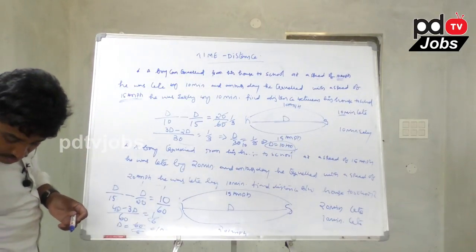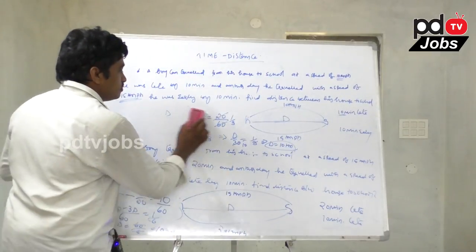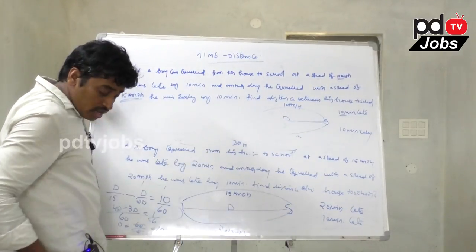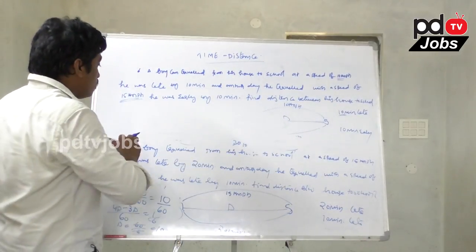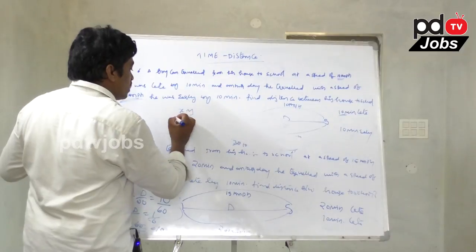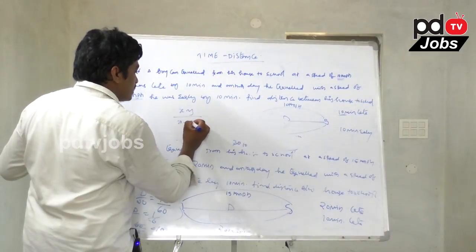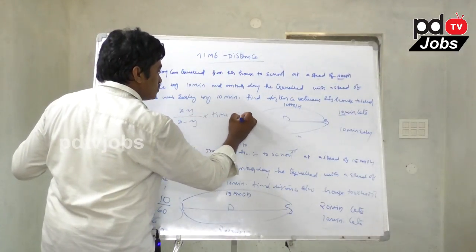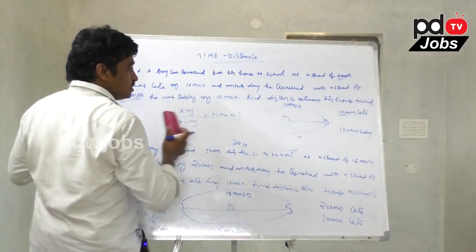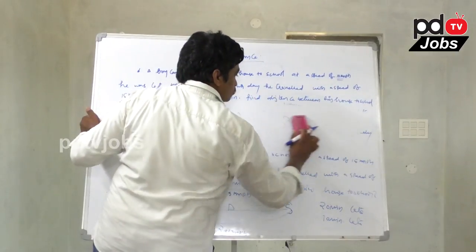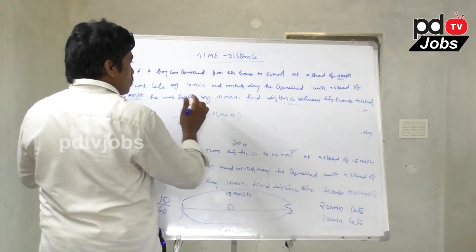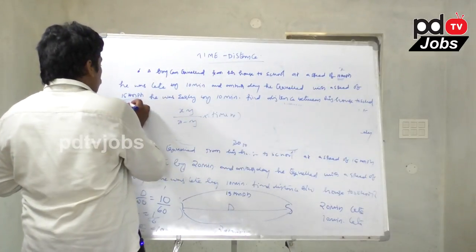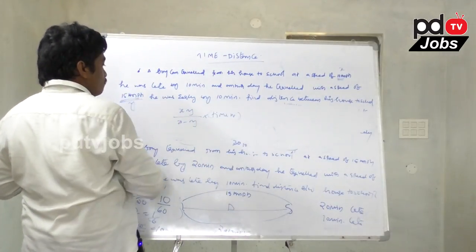This can also be solved using the formula: distance equals X times Y divided by (X minus Y) times time in hours. Here X is 10 and Y is 15.